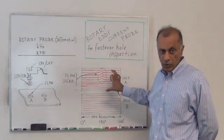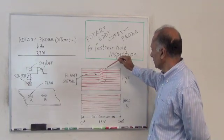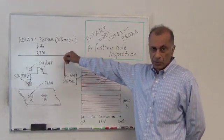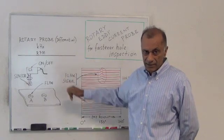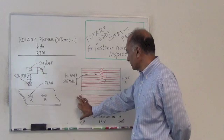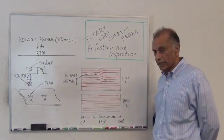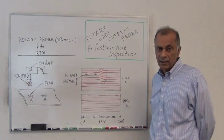This display is called a waterfall display, and the crack which is here is shown by the signal right here. When the same probe is inserted inside hole B, then the signal will be clear and it's going to show up with this pattern with no signal on the screen. So this is a brief description of the technique.